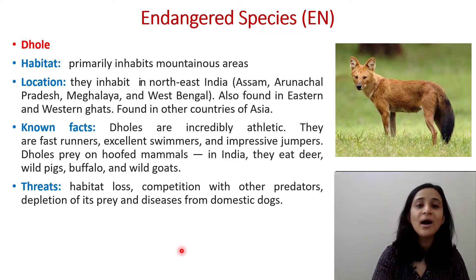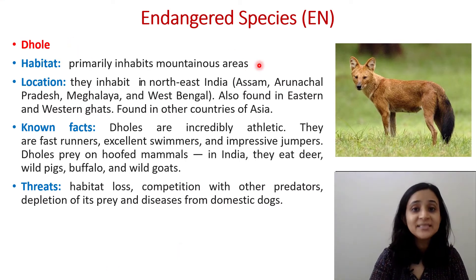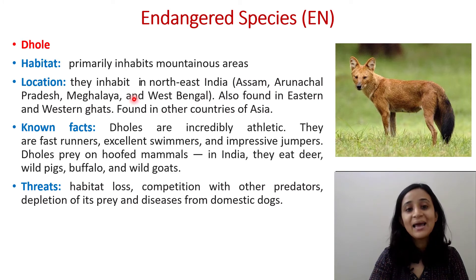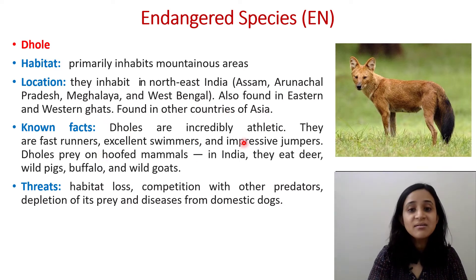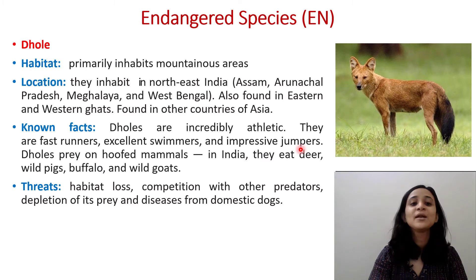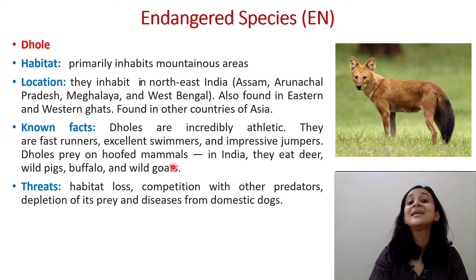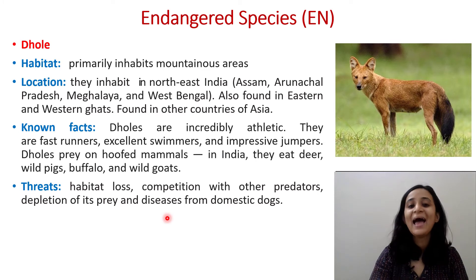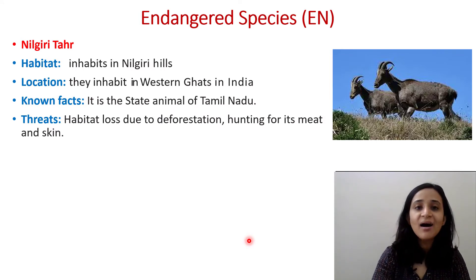Next is the Dhole, also under Endangered. It primarily inhabits mountainous areas, found in northeast India — Assam, Arunachal Pradesh, Meghalaya, and West Bengal — as well as in the Eastern and Western Ghats and other Asian countries. Dholes are incredibly athletic: fast runners, excellent swimmers, and impressive jumpers. They prey on hoofed mammals such as deer, wild pigs, buffalo, and wild goats. Threats include habitat loss, competition with other predators, depletion of prey, and diseases from domestic dogs.